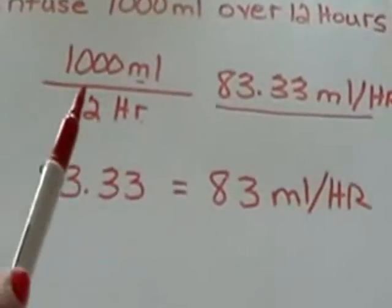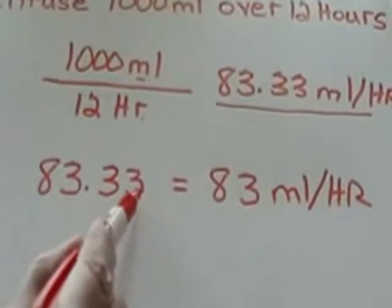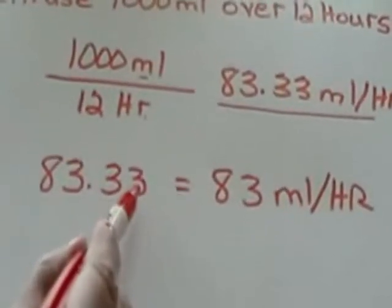If the last digit to the right is a 5, 6, 7, or 8, you would round up.